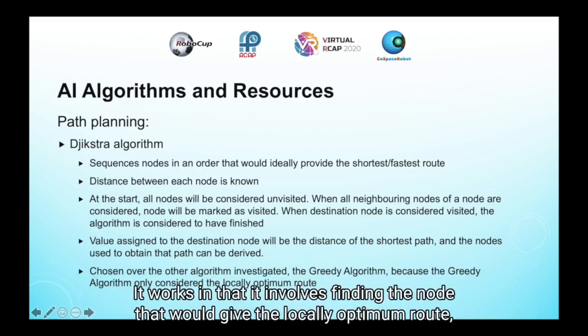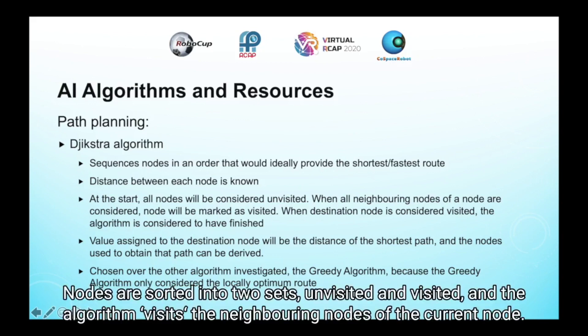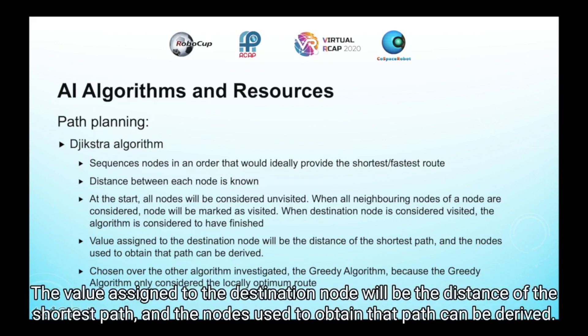It works by finding the node that will give the locally optimum route, and yet still considers routes from the unchosen nodes and will add the final results together to form the optimum route. Nodes are sorted into two sets, unvisited and visited, and the algorithm visits the neighbouring nodes of the current node. When the destination node is considered visited, the algorithm is finished. The value assigned to the destination node will be the distance of the shortest path, and the nodes used to obtain that path can be derived.